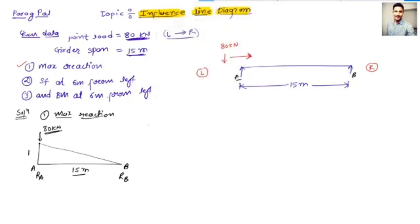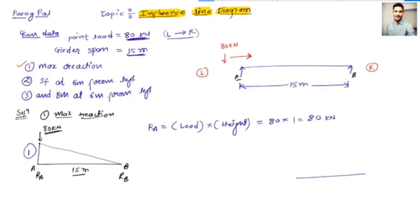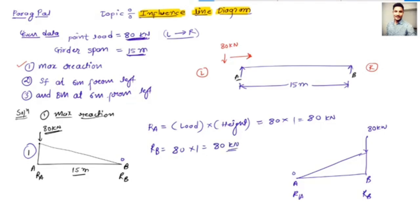Ra equals the load multiplied by the height. The height is always 1, so Ra = 80 kilonewton × 1 = 80 kilonewton. Similarly for Rb: the diagram has the 80 kilonewton load at point B, with Ra at point A equal to 0. So Rb = 80 × 1 = 80 kilonewton. Therefore Ra and Rb are both 80 kilonewton.